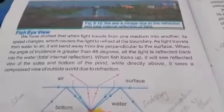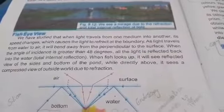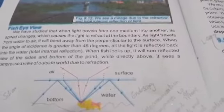As light travels from water to air, it bends away from the boundary surface — it moves away from the perpendicular. When the angle of incidence is greater than 48 degrees, all the light is reflected back into the water at the boundary. This is because when light reflects at the boundary, the medium changes. All the light is reflected back into the water — we call this total internal reflection.